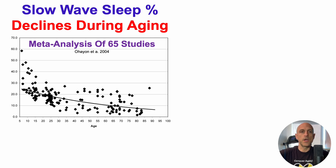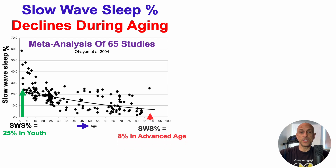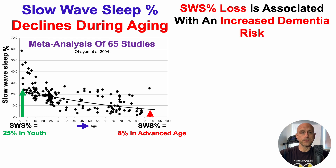On the y-axis we've got slow wave sleep percentage — slow wave sleep amount divided by total sleep time — plotted against age on the x-axis. This study included people from five years old up to 90 years old. Slow wave sleep in youth is about 25%, and for a 20-year-old it's about 20%. The age-related trend line shows it declines during aging such that a 90-year-old averages only 8% SWS percentage.